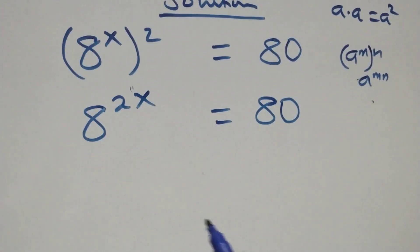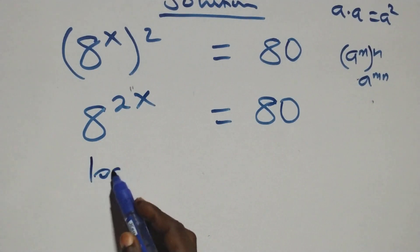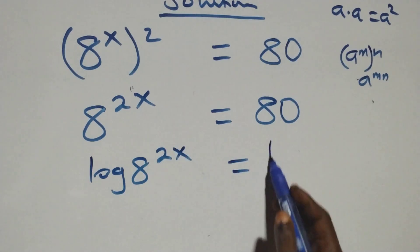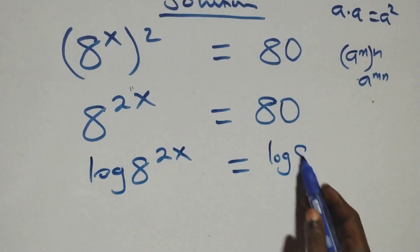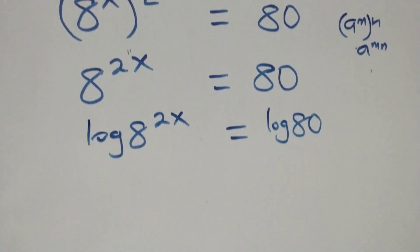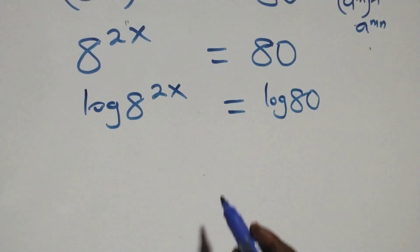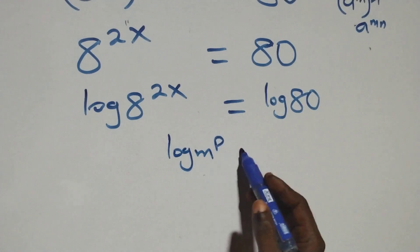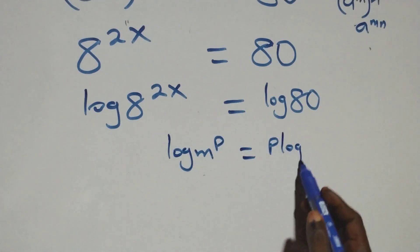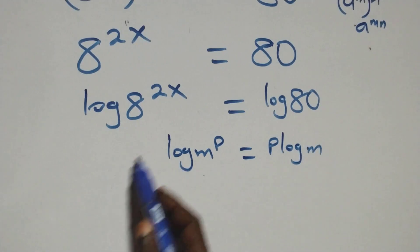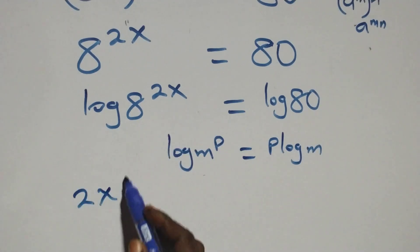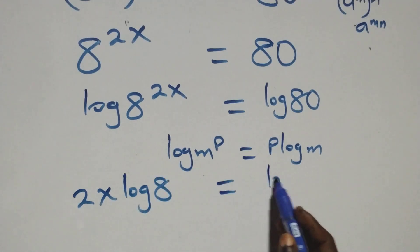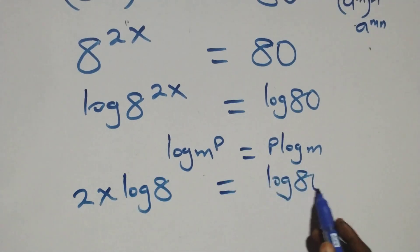Next step: we take the log on both sides. We have log of 8 raised to power 2x equals log 80. Here we apply the power rule of logarithms: log m raised to power p is the same as p times log m. The power here is 2x, so we have 2x times log 8 equals log 80.